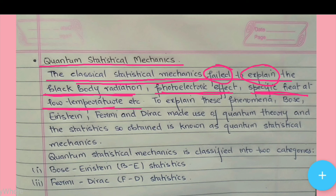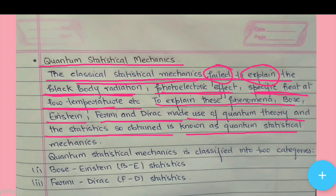To explain these phenomena, Bose, Einstein, Fermi, and Dirac made use of quantum theory, and the statistics obtained is known as quantum statistical mechanics.